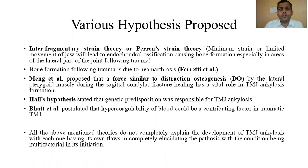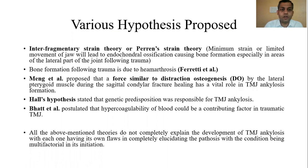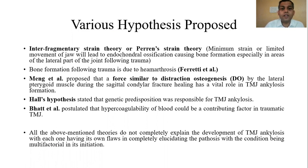Browsing through the literature, various hypotheses have been proposed for Temporomandibular Joint Ankylosis. The first includes the periosteal strain theory, which states that minimal strain or limited movement of the jaw will lead to endochondral ossification following trauma. Bone formation following trauma due to hemarthrosis is also documented. Ming et al. proposed that forces similar to distraction osteogenesis due to the lateral pterygoid muscle are responsible. Hall's hypothesis directs towards genetic predisposition, and Butel et al. postulated that hypercoagulability of blood at the traumatic site leads to ankylosis. All these theories are multifactorial and individually flawed.